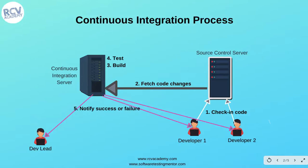Then on the continuous integration server, the build happens — that is step three. Once the build is successful with no failures, the automated set of tests is executed in step four. These tests could be build verification tests or other functional tests and key functional tests that need to be executed.